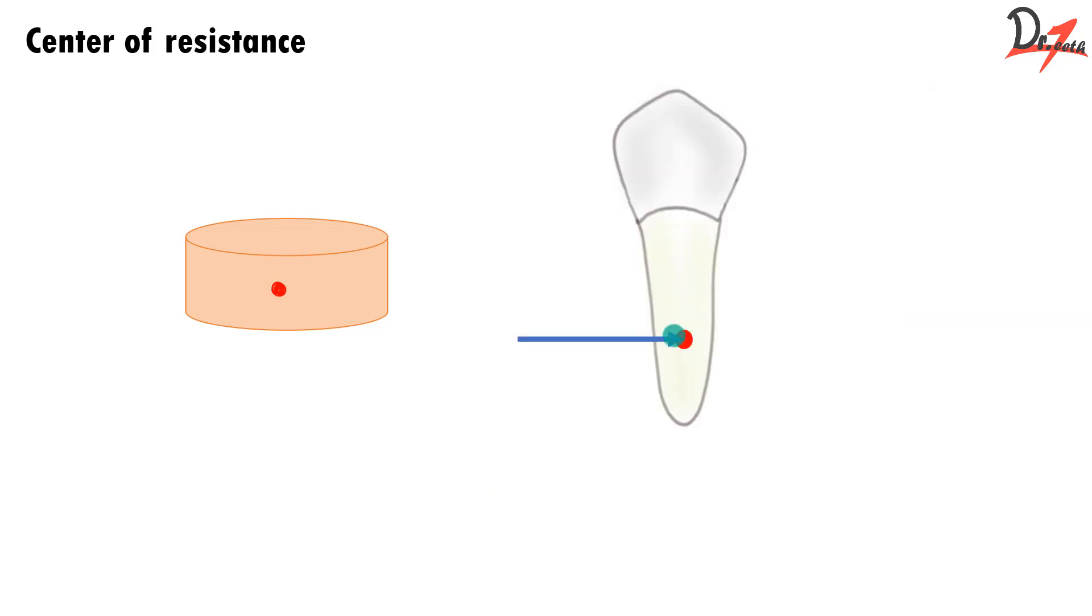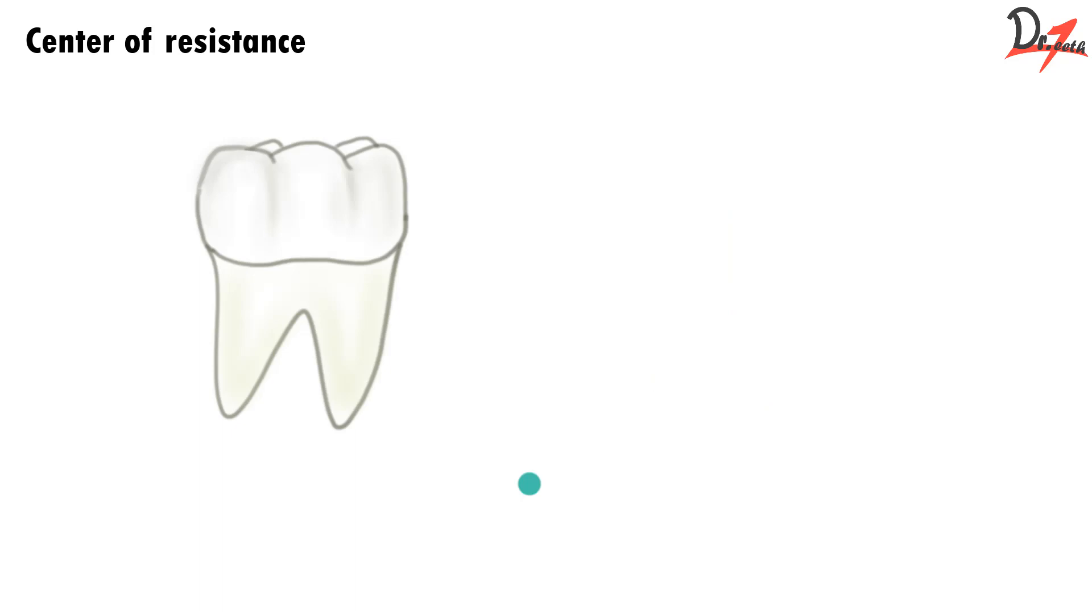This point varies with the number of roots you're having. In single rooted teeth, this point will be on the long axis of the tooth, probably somewhere between one third and one half of the tooth. For multi rooted teeth, the center of resistance is 1 to 2 mm apical to the furcation. This is the furcation, so 1 to 2 mm apical to the furcation in multi rooted teeth.